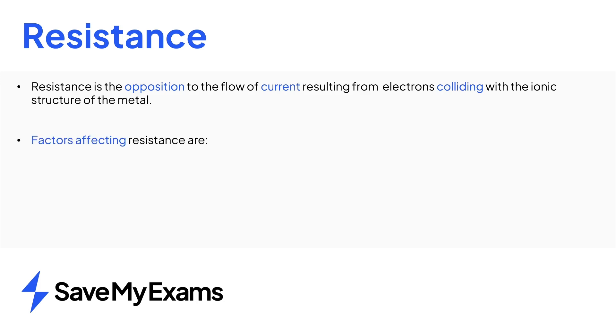Factors affecting resistance are as follows. Temperature: the greater the temperature, the greater the resistance. Cross-sectional area: the smaller the cross-sectional area of the wire, the greater the resistance. And length: the greater the length of the wire, the greater the resistance.